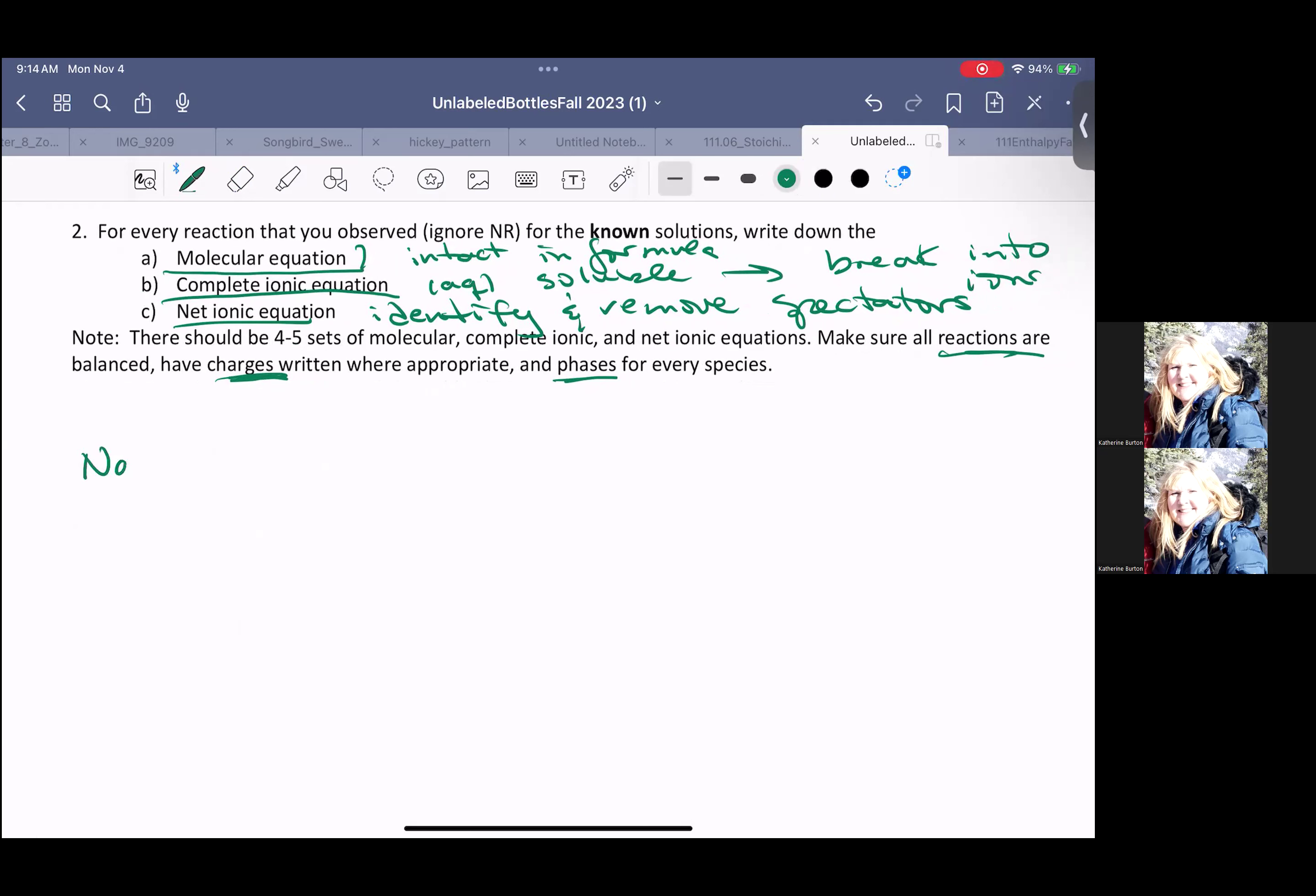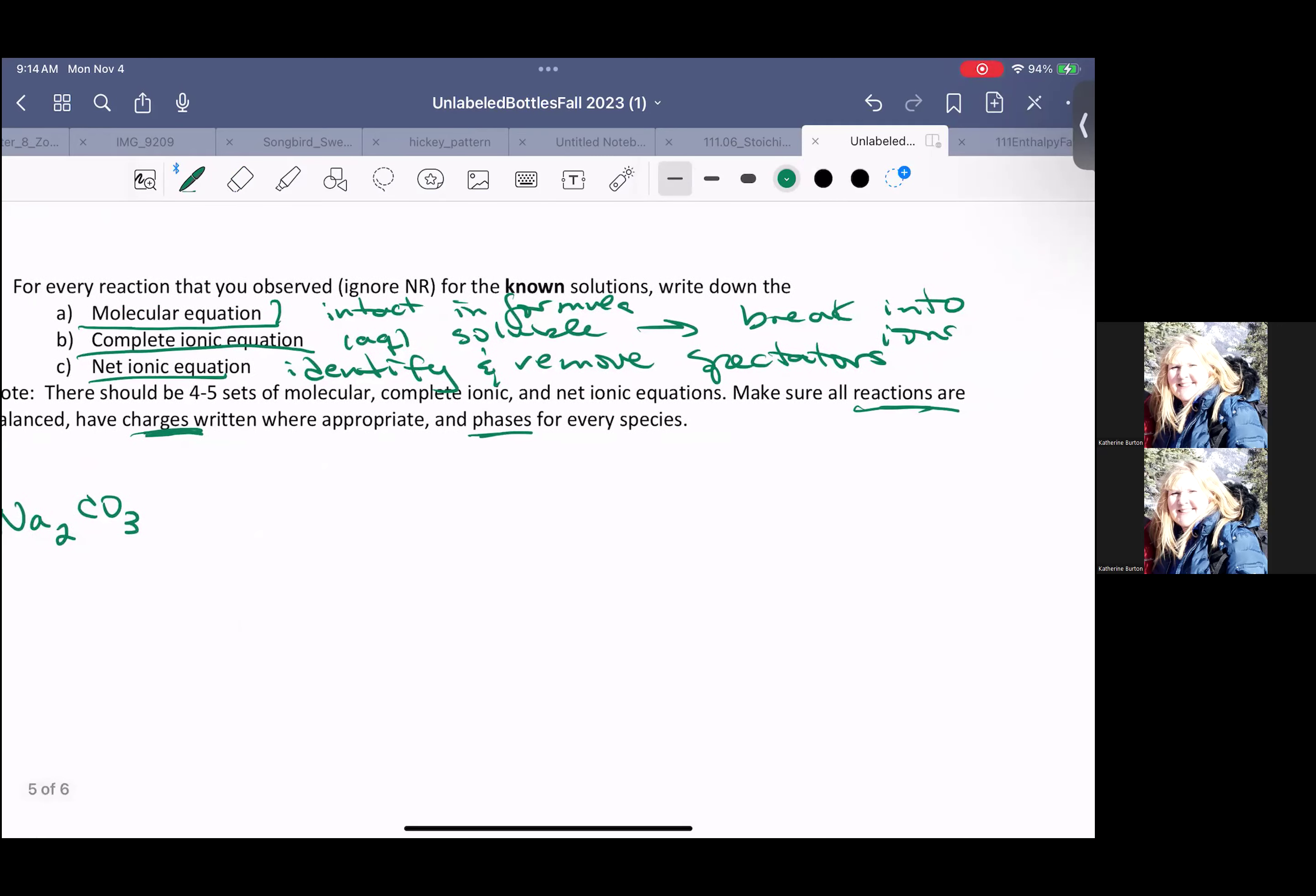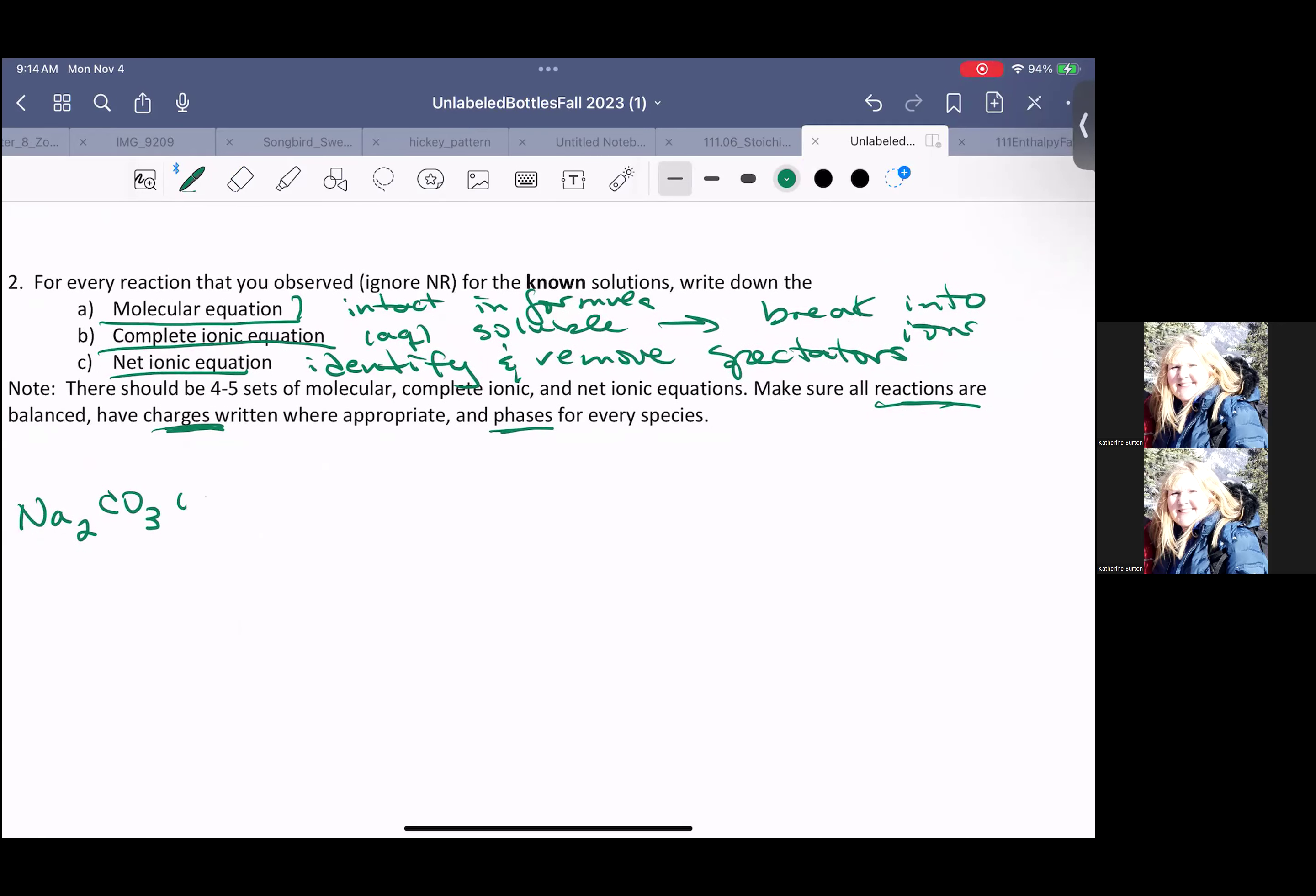We know from our solubility rules that all compounds that contain sodium are soluble. So we're going to put an AQ there, and it is soluble in water. We're going to react it with calcium chloride.